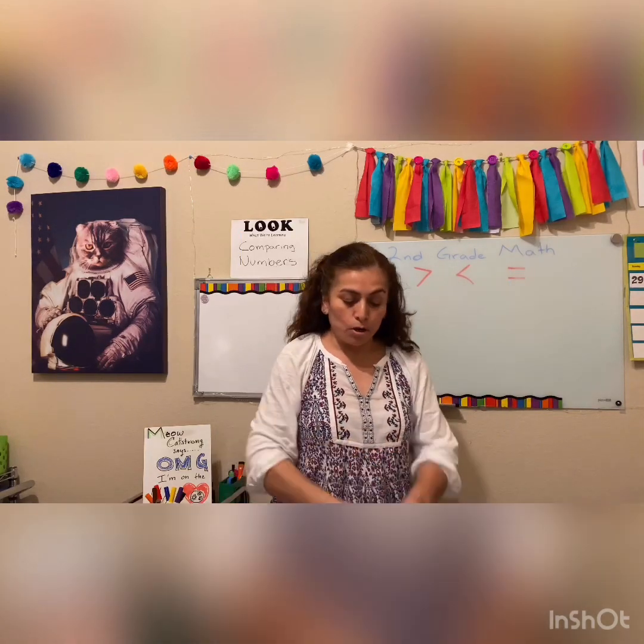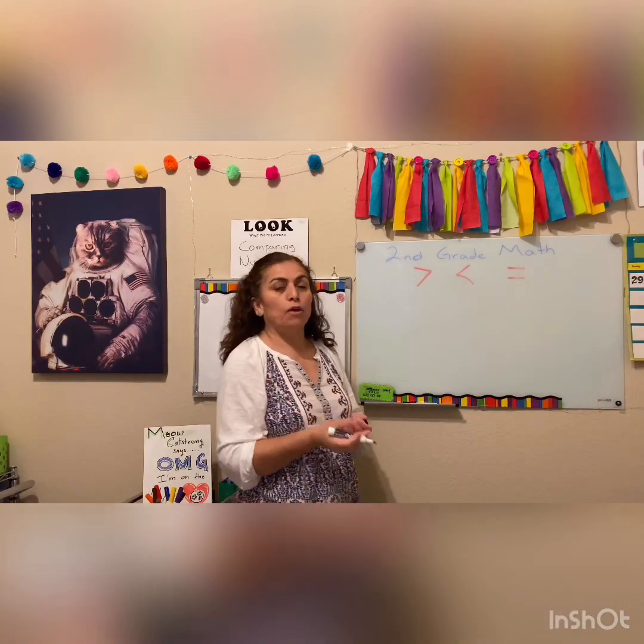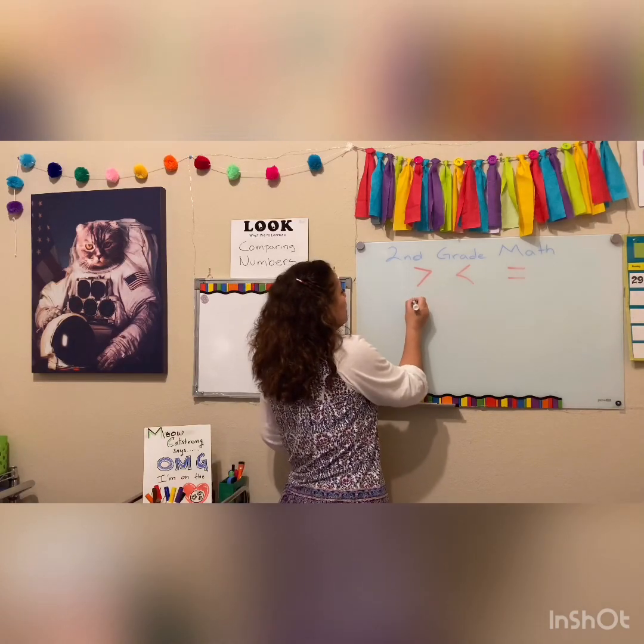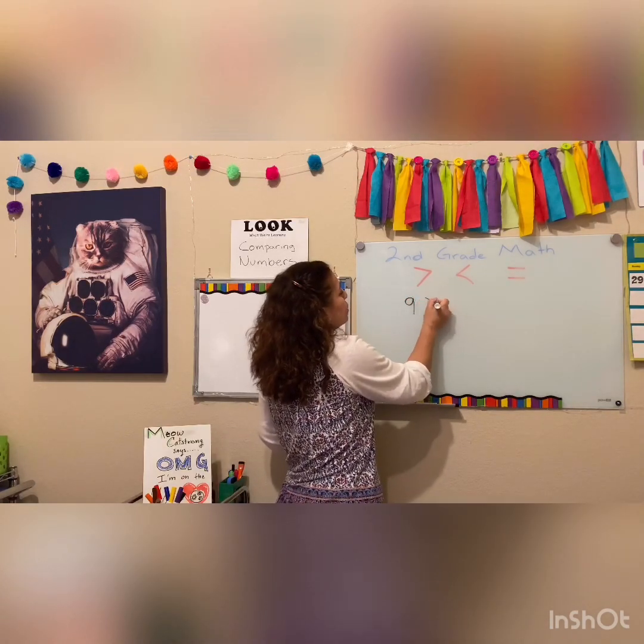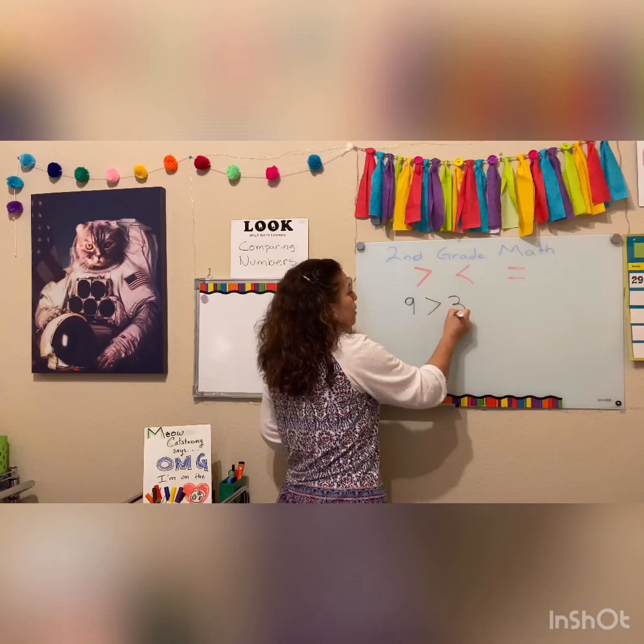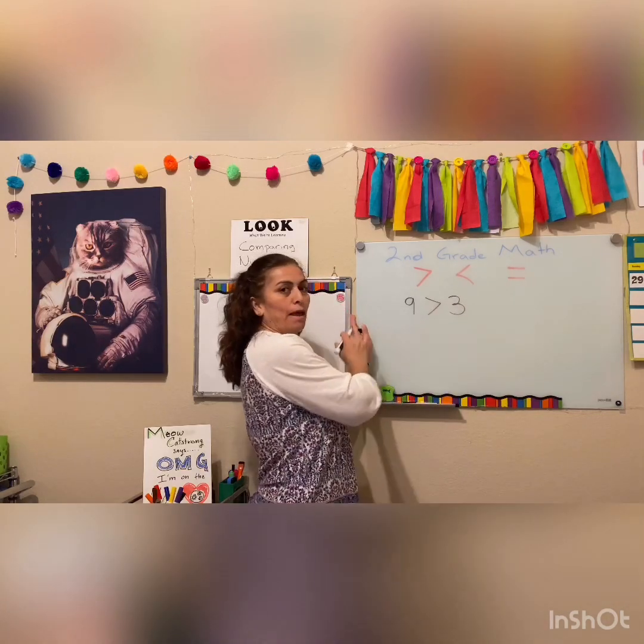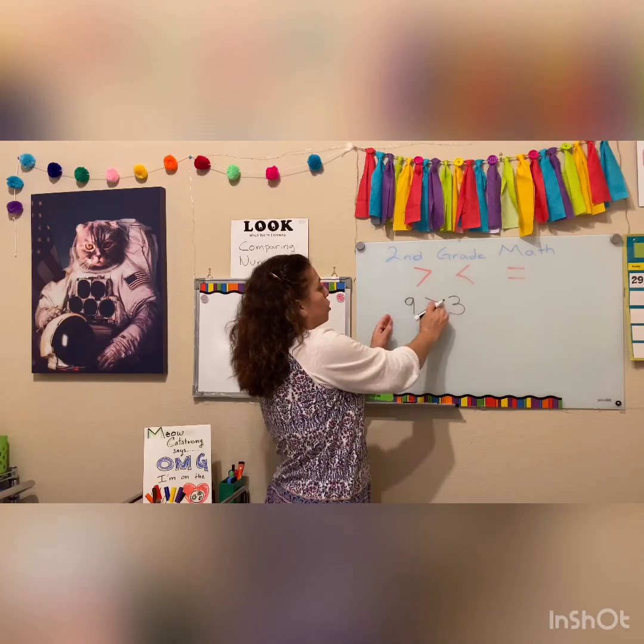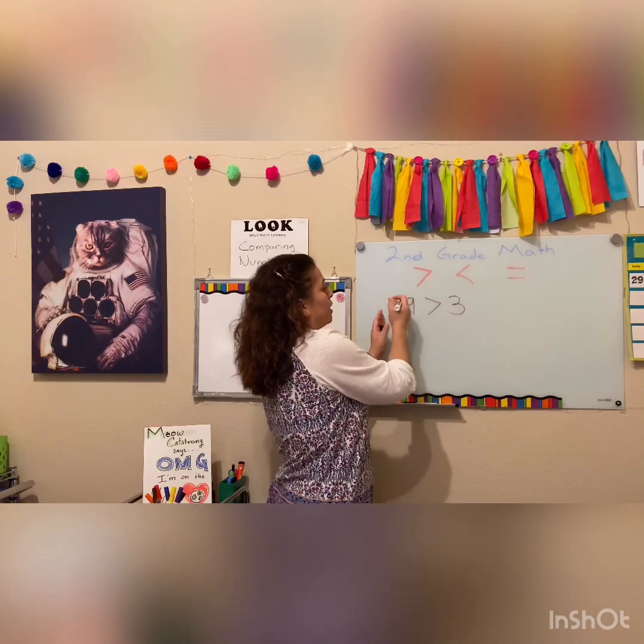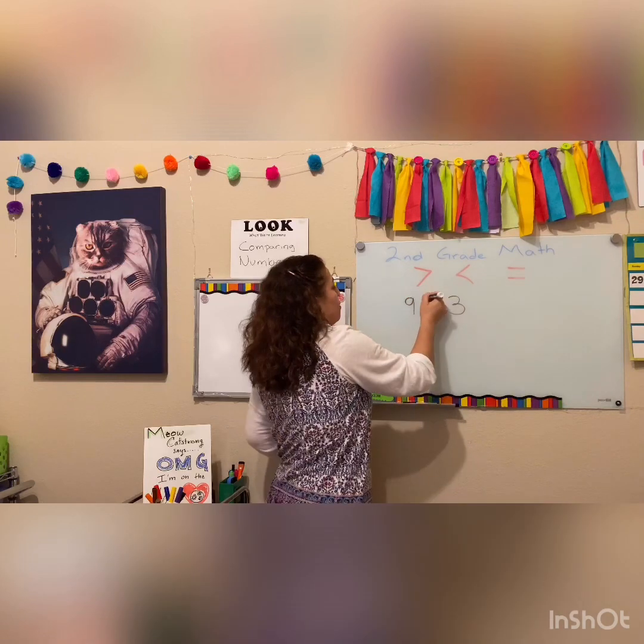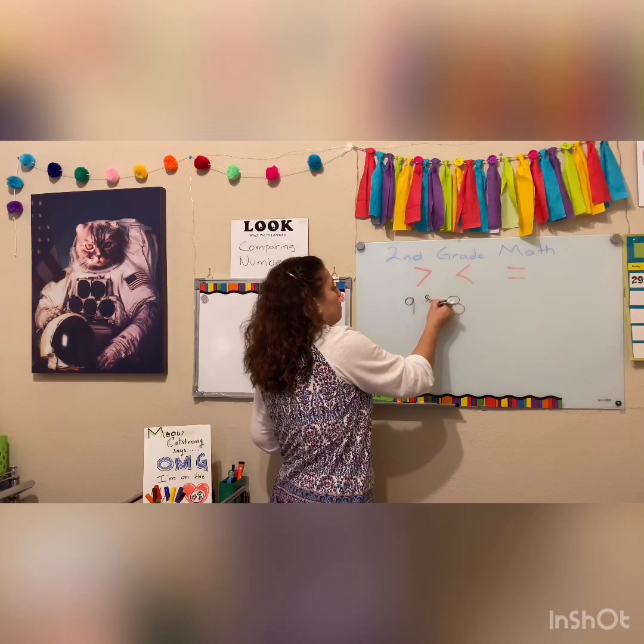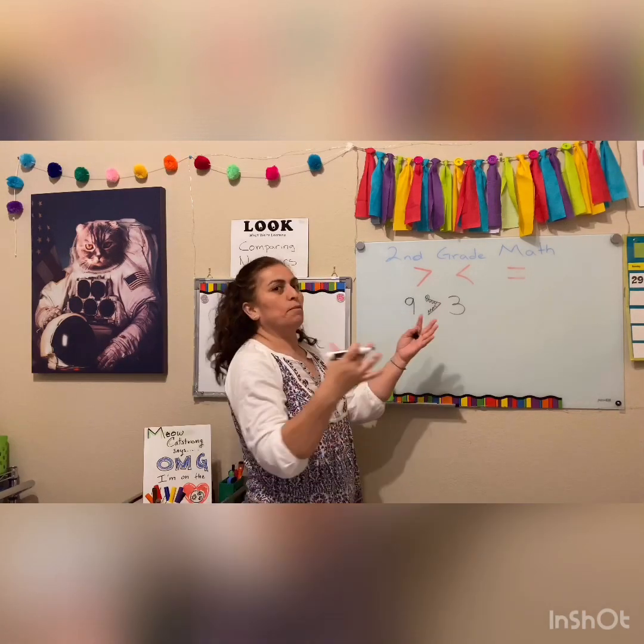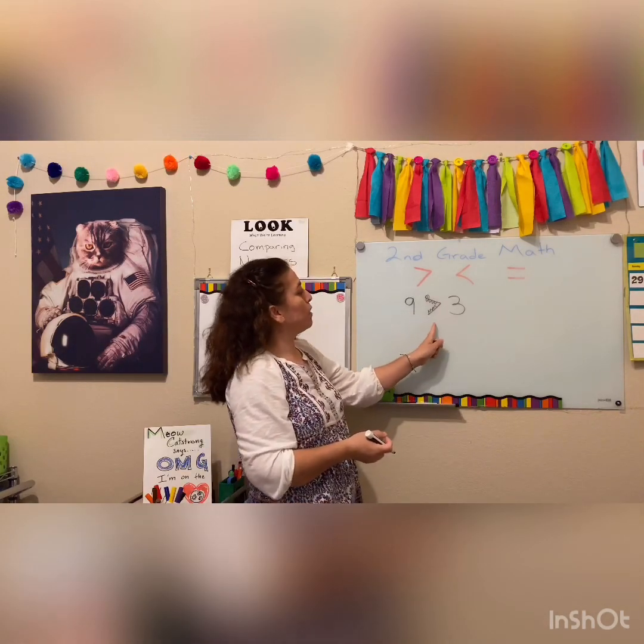When I compare numbers I can start with easy numbers and I can start with one-digit numbers. I can say nine is greater than three. Remember that we read from left to right and I read this first number, nine greater than three. We can think about that alligator mouth eating the biggest number because he's very hungry so he wants the biggest number. Nine greater than three.